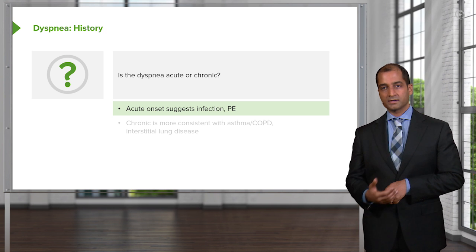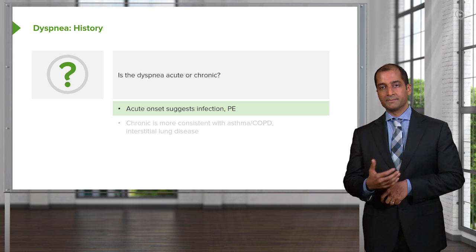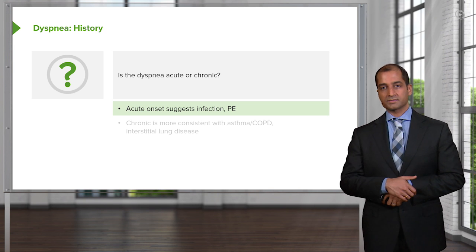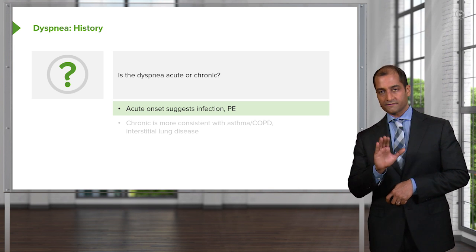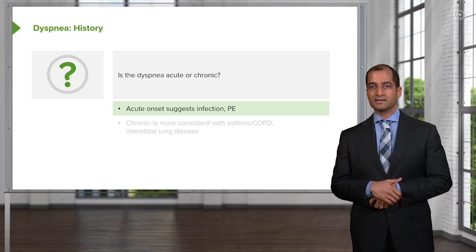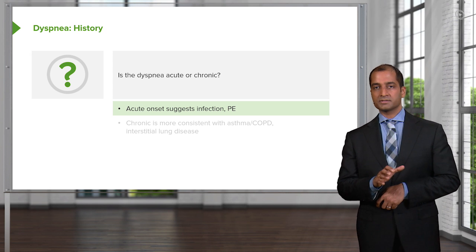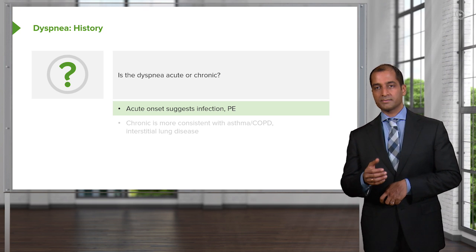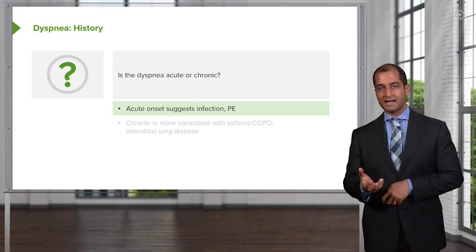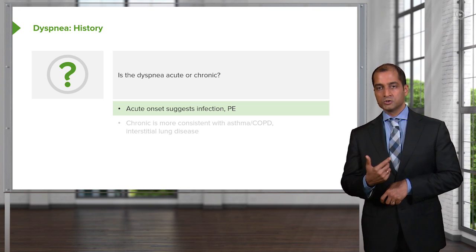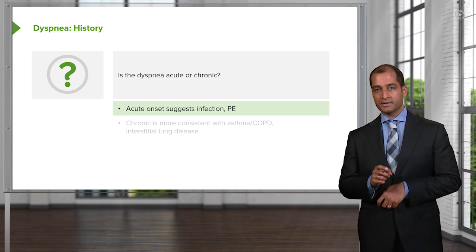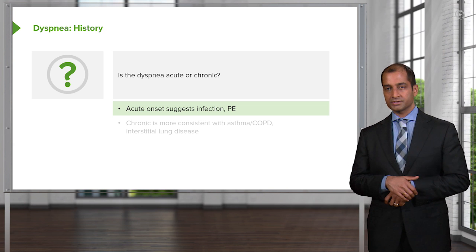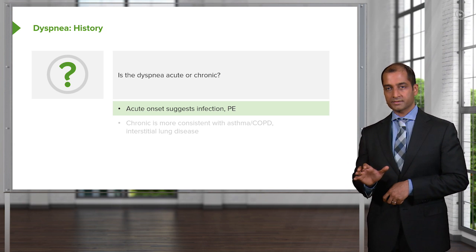Imagine your patient has a Homan's sign, in which there is pain in the calf upon dorsiflexion. This indicates your patient may have DVT. Whenever your patient has DVT, that thrombus might break off and result in a massive saddle embolus. What's your patient doing? Rapid shallow breathing. Acute onset and rapid shallow breathing — understand your patient is still remaining hypoxic. That's important.